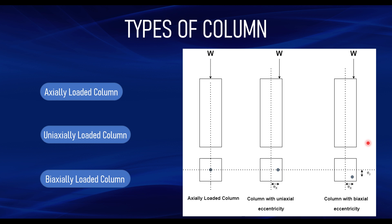According to the Eurocode, a column cannot be considered purely axially loaded, because due to construction activity and errors there is something called geometric imperfection — an imperfection that occurs due to construction placement and other factors. Therefore the Eurocode recommends a minimum eccentricity that must be applied to a column. You cannot design a column as purely axially loaded according to the Eurocode; there must be a minimum moment generated from imperfection due to construction and other factors. These are the major categories for classifying types of columns.